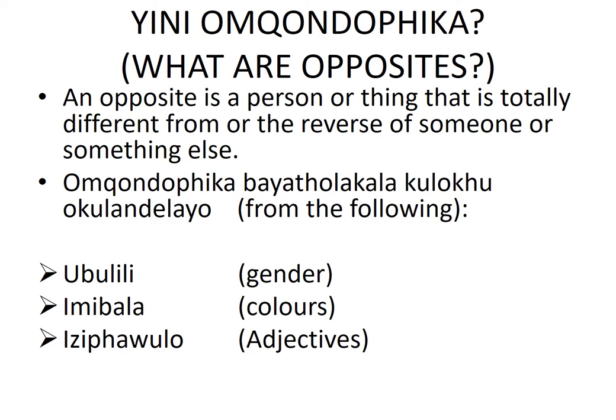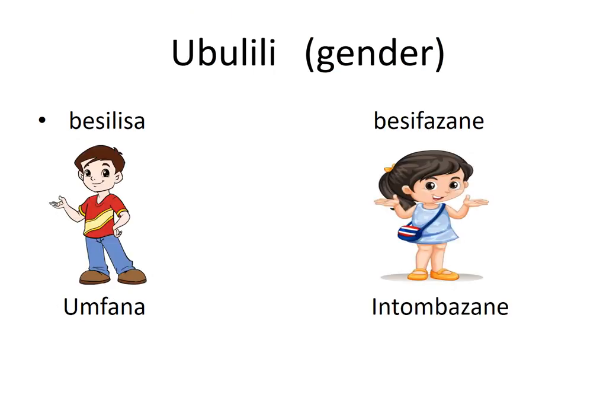Now we are putting down our reflections. Let us look at ubulili — gender. Under male gender we have: umfana (boy), ubaba (father), uputi, umalume, umkulu, and umfowetu. All these people fall under male gender.